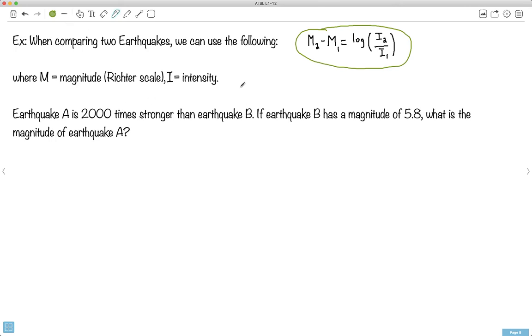And we know that B has a magnitude of 5.8. What's the magnitude of A? Let's see what to do. I think it's a good idea to rewrite this equation in our terms. It doesn't matter how you want to do it, but you can make it A or B first. It actually doesn't matter. So let's just do M_A minus M_B. It could have been the other way around. And we'll say log of, intensity A over intensity B. Just with the way I've named them like this. All right. What do we know?